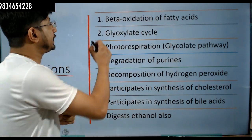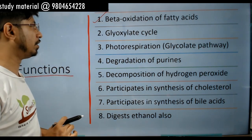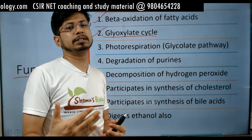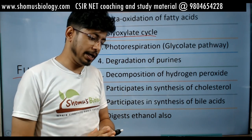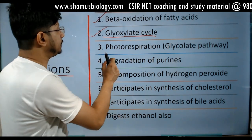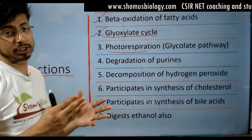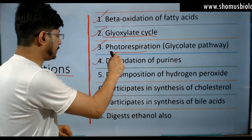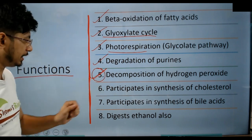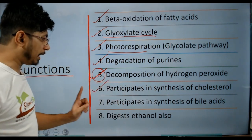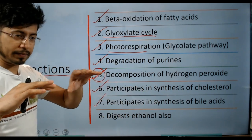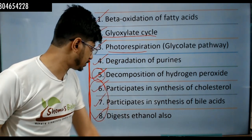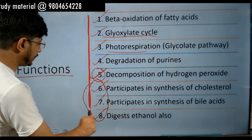What are the functions of paroxysomes? First, beta-oxidation of fatty acids — beta-oxidation of fatty acids can be carried out here. Beta-oxidation is also carried out in the mitochondria, but paroxysome is another place for it. The glyoxylate cycle takes place inside the paroxysm. Photorespiration — in photosynthesis, plants have the Rubisco enzyme which can fix oxygen as well as carbon dioxide. If it fixes oxygen, we call it photorespiration. In that case, paroxysomes are needed as a compartment to convert photorespiration components into something the plant can utilize. Degradation of purines, decomposition of hydrogen peroxide, and detoxification are done here. Paroxysomes participate in synthesis of cholesterol, synthesis of bile acids — needed for fragmentation of fats during digestion — and they digest ethanol as well. That's why they are more predominant in the liver.